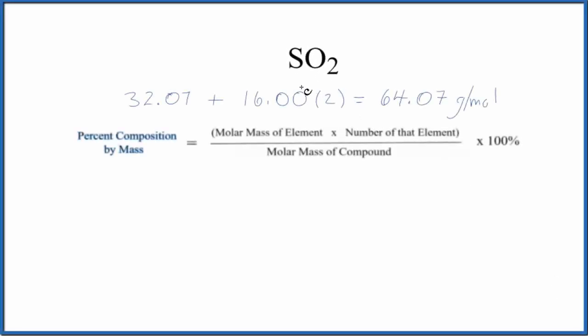In this video we'll find the percent composition by mass for each element in SO2. This is sulfur dioxide. So to do that we'll use this formula here and the first thing we need to figure out is the molar mass for the compound.